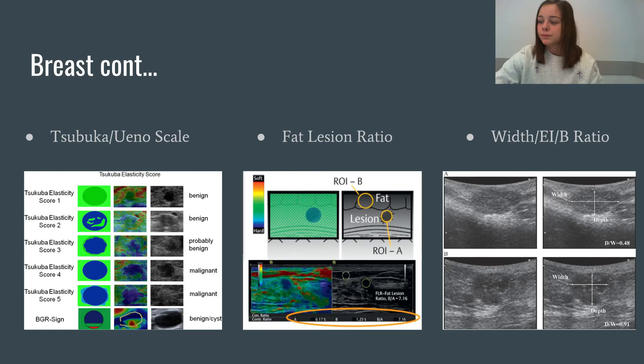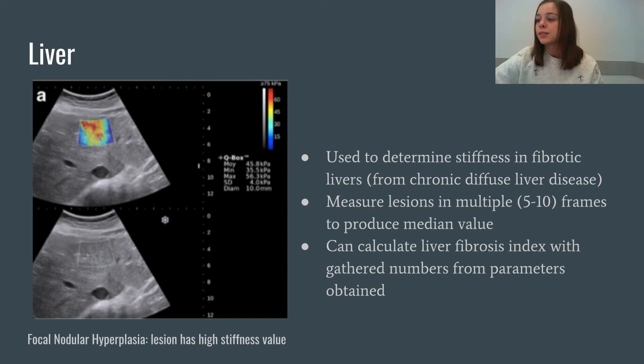Strain elastography is also used to determine the stiffness in fibrotic livers. Fibrotic livers arise from chronic diffuse liver disease and will begin to develop lesions. These lesions need to be measured in multiple frames, ranging between 5 to 10, in order to provide an accurate median value. From the median stiffness value obtained, along with other values relating to fibrosis, we can calculate the liver fibrosis index. A higher index proves a stiffer lesion.